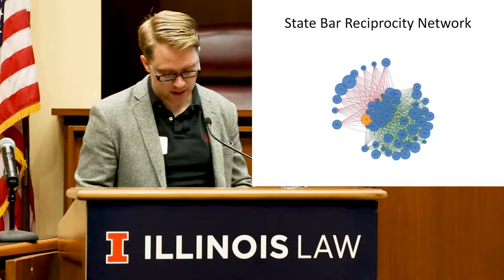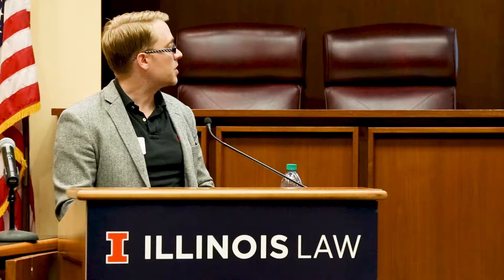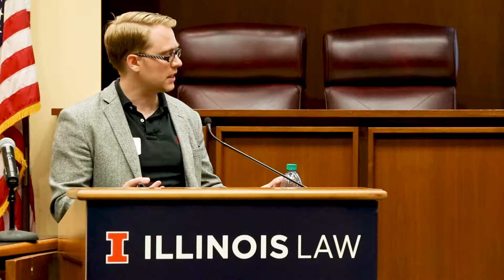Beyond just visual representation, you can also analyze structures of the network and learn something about the group you're studying. I study the legal profession, and one of the things I'm interested in is the organizational structure of law firms. Are law firms really integrated organizations where everybody works with everybody else — really collegial organizations? Or are they more like fiefdoms, where everybody is just bound together by a brand name?